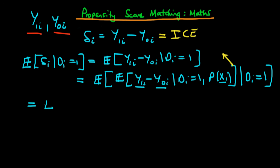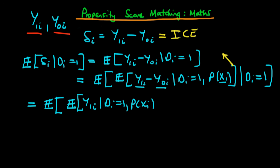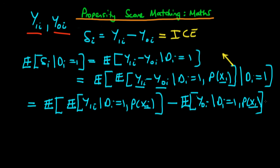Doing that, we get the expectation of the expected value of y1i given that di is equal to 1 and also given the propensity score, minus the expected value of y0i given that di is equal to 1 and also given the propensity score. We then condition on di equal to 1 to ensure equality with the line which came before.